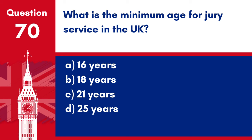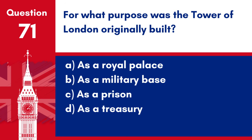Question 70. What is the minimum age for jury service in the UK? a. 16 years. b. 18 years. c. 21 years. d. 25 years. Answer: b. 18 years. The minimum age for jury service in the UK is 18 years.